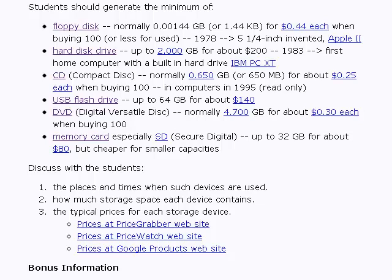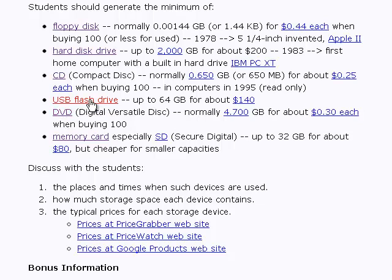Those are the six common storage devices. First it was floppy disks — the only way to store information. Then the hard drive was added inside the computer. Then the CD came along. Then USB flash drives. Then DVD drives replaced compact disk drives. And finally, memory cards. At that point, floppy disks were no longer installed in computers because people replaced them with these newer devices.